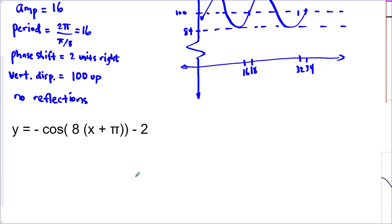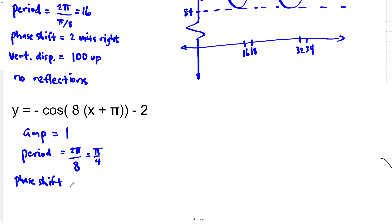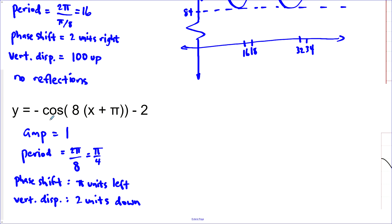For the next equation: amplitude is the absolute value of a, so 1 (not negative 1 — that's a reflection). The period = 2π / b = 2π / 8 = π/4. The phase shift is π units to the left (because there's a plus sign). The vertical displacement is 2 units down. There is a reflection over the x-axis this time — a vertical reflection about the x-axis.